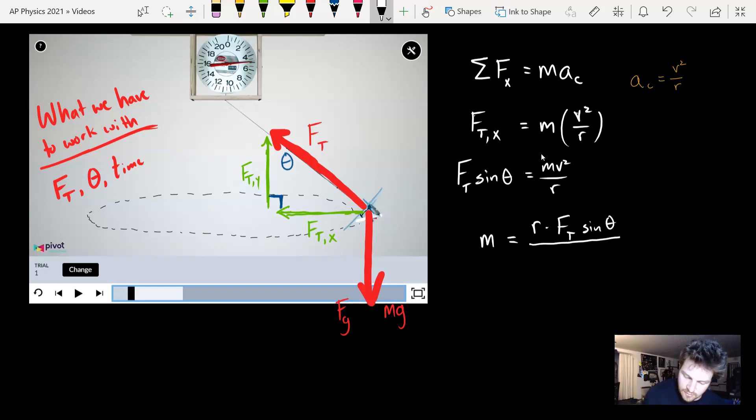Now you're kind of seeing where we run into an issue, because if I wanted to plug in numbers for these variables and solve for the mass, I know force of tension, that's one of the things I can measure in this experiment. I know the angle, that's what I can measure with the protractor. What I don't know is the radius or the speed. I don't have a meter stick to use in this, and I don't have some way of measuring the speed. So this x direction ends up not working because we don't have enough to actually solve for that.